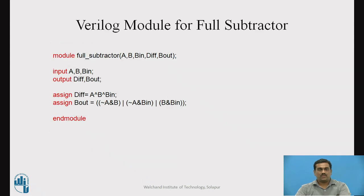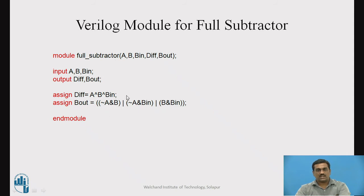This is the Verilog module definition for the full subtractor circuit. The module definition starts with the module keyword; the inputs and outputs are listed and defined. The two key assign lines are: assign diff = A XOR B XOR BIn, which assigns the XOR of the three bits A, B, and BIn to diff. Then BOut is written as (A-bar AND B) OR (A-bar AND BIn) OR (B AND BIn), and the evaluated result is assigned to BOut. The module definition ends with endmodule.